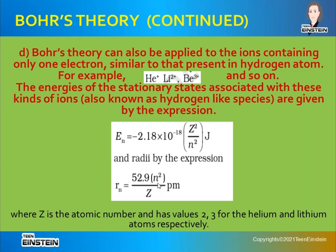If we want to calculate the radius for hydrogen, we need to find which stationary state the outermost electron lies in. For hydrogen with one electron, n = 1 and Z = 1, so the Bohr radius for hydrogen is 52.9 picometers.